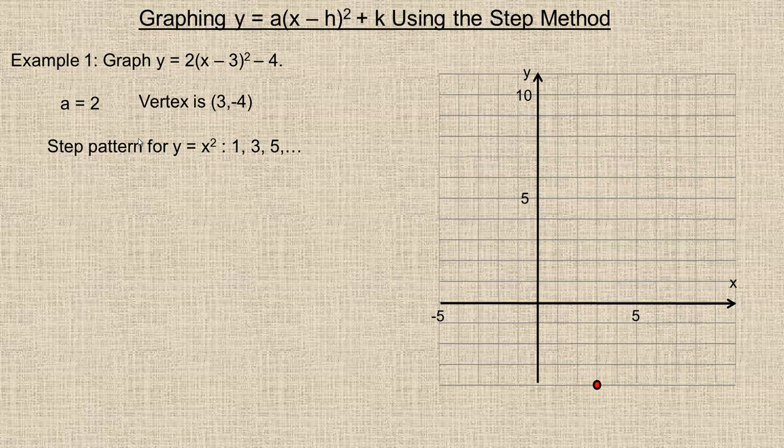Now, the step method for the normal standard parabola, no transformations whatsoever, is 1, 3, 5. It's actually all the odd numbers: 1, 3, 5, 7, 9, etc. We don't generally need to go past these number of points, but if you want to go to 7 or 9 or 11, you can if your graph is high enough. And what you do for the step pattern for this one is you multiply each of these numbers by 2, because stretch means that the y values are twice as large, so those steps are twice as large.